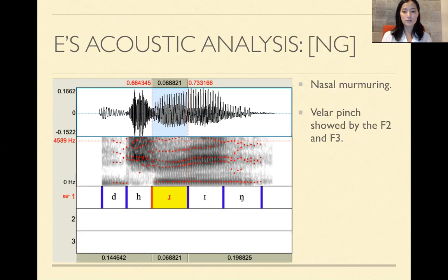So /ŋ/. So we see on the spectrogram that there's some nasal murmuring. So you see a lot more like white rather than the black and the gray. And you see the velar pinch because /ŋ/ is a velar nasal. The F2 kind of rises up to meet F3, which is the velar pinch.